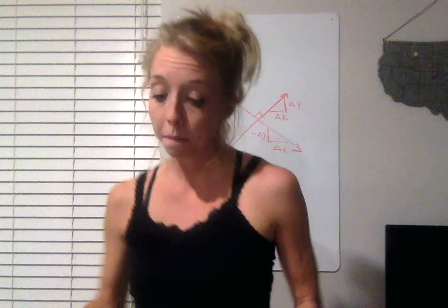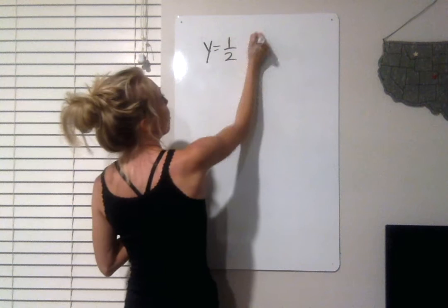Number 8 says write an equation for a line parallel to y equals 1 half x plus 17. Passing through 8 negative 4. We need a line that's parallel to y equals 1 half x plus 17.